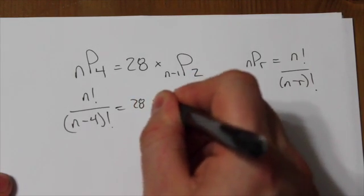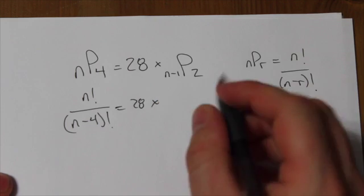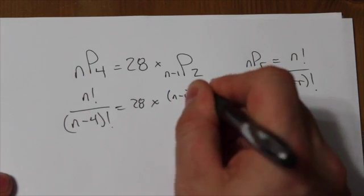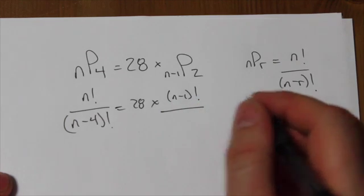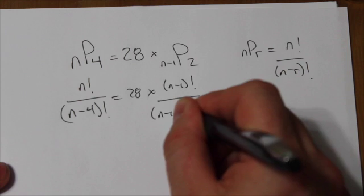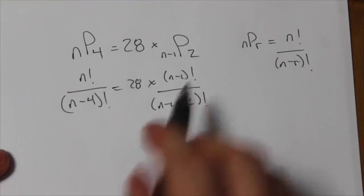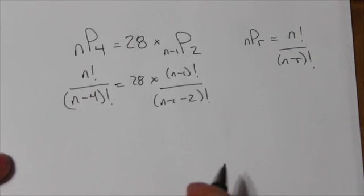Here, it'll be 28 times, now this is a little bit more complicated, but the left side here is n minus 1, so it's n minus 1 factorial over the left side minus the right side. So it's going to be left side minus the right side factorial. So that's why it's n minus 1 minus 2 down here in the denominator.